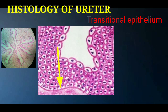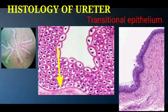The basal layer of the transitional epithelium will be cuboidal or columnar, and above that we have four to five layers of polygonal cells. The superficial layer shows specific cells called umbrella-shaped cells, and a few of these umbrella-shaped cells are binucleated.